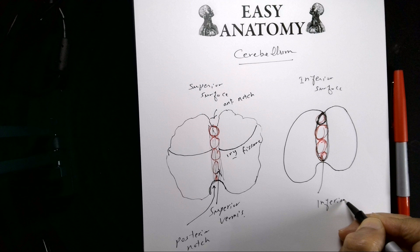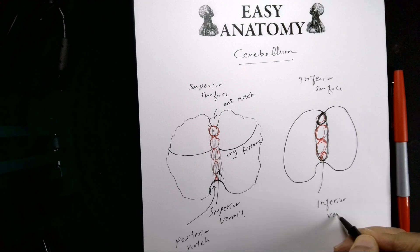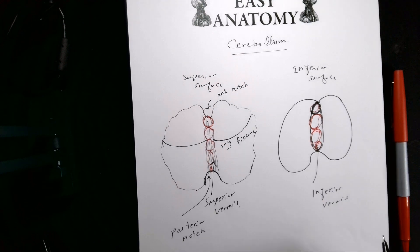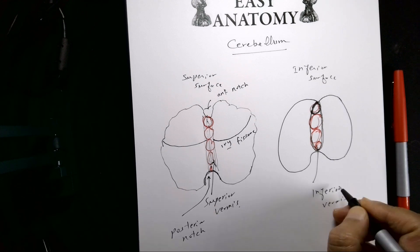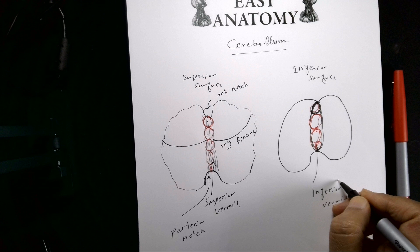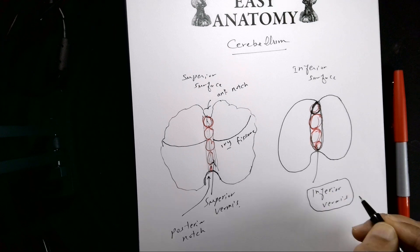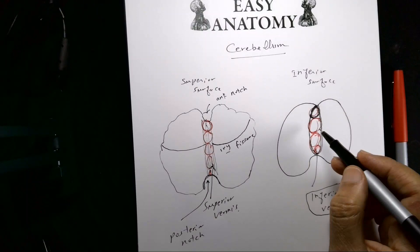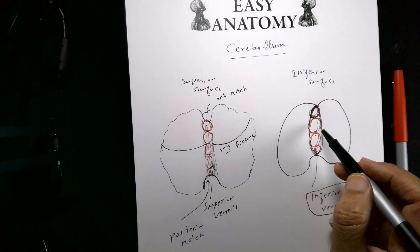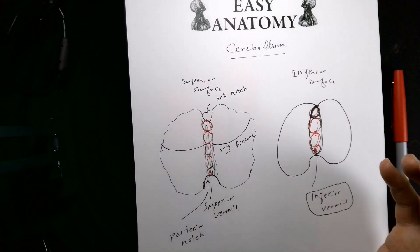The inferior vermis is located inside a deep groove, which you can easily see. The inferior vermis is observed sitting within this groove on the inferior surface.